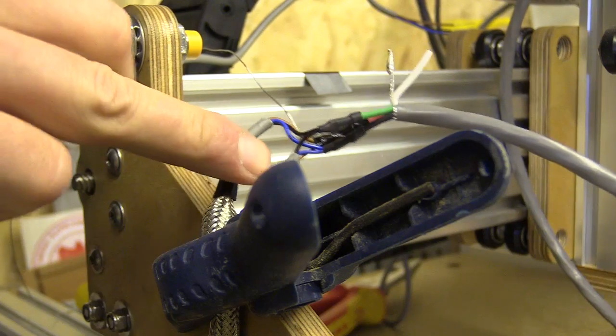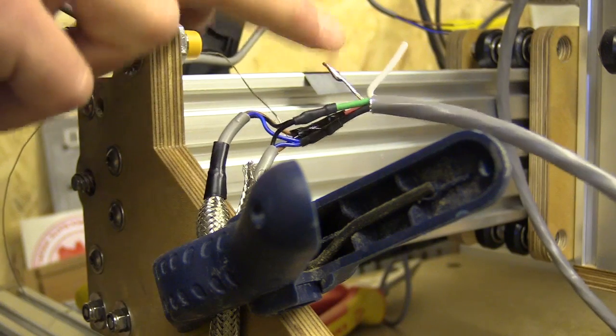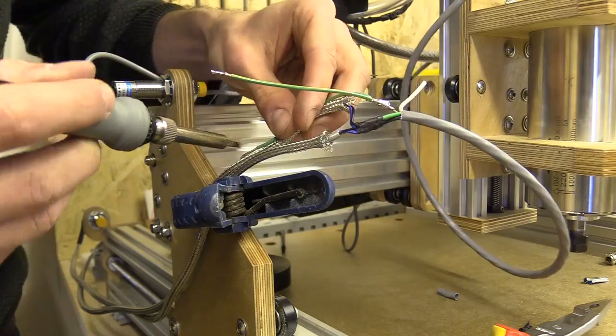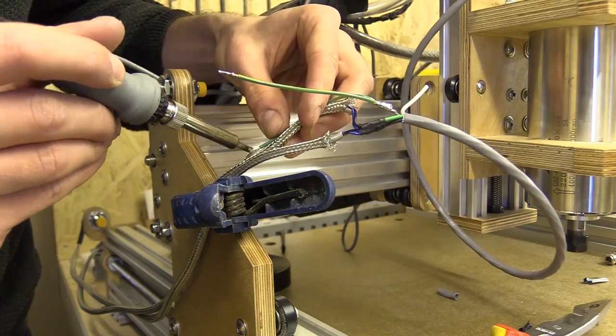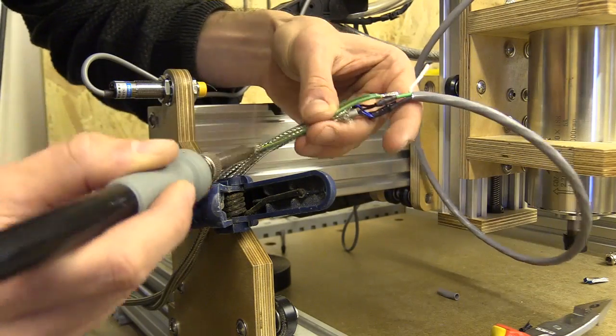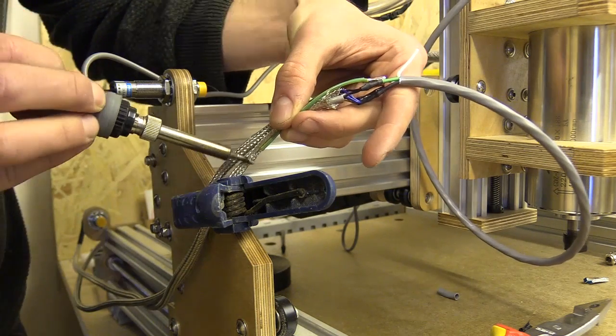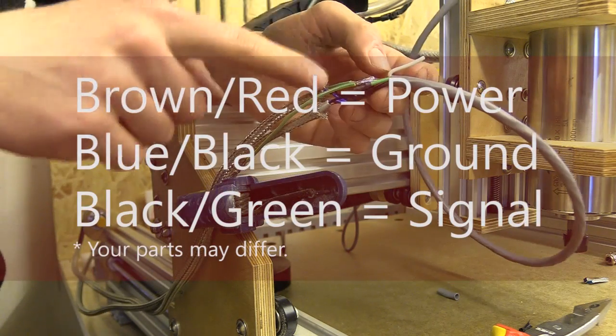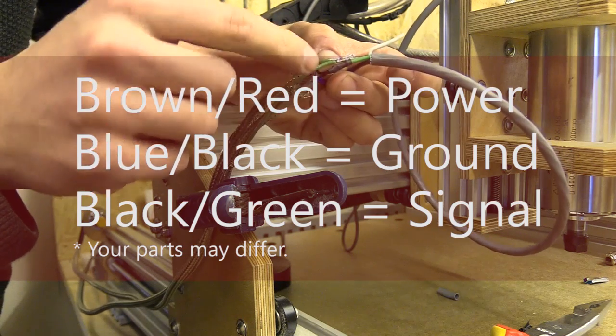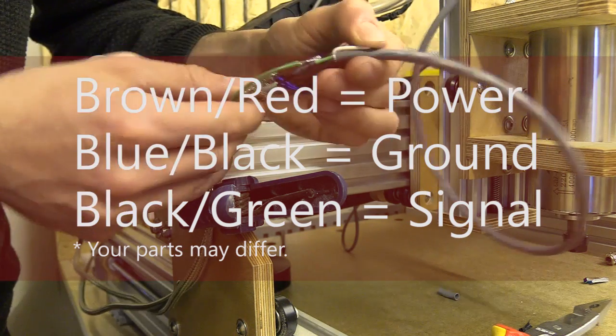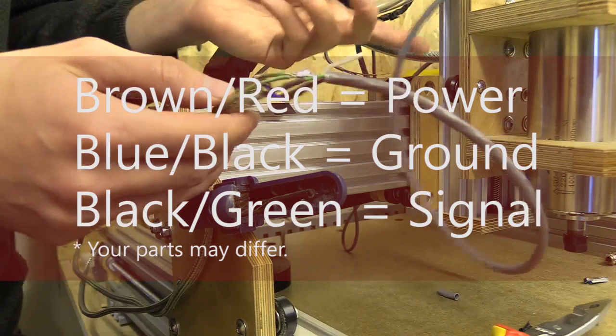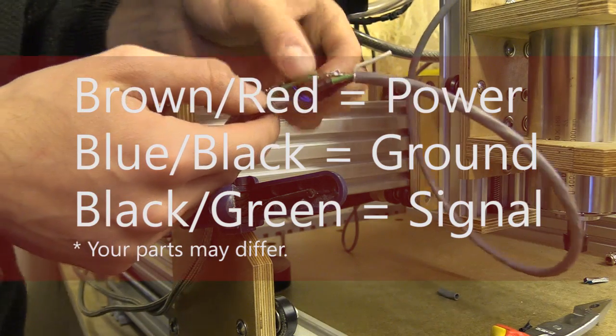I just need to connect the braid on these two to that one there. From the proximity sensors the brown goes to red, the blue goes to black and the black goes to green. I'm not using the white cable because these are three core and that's an extra one that I don't need.